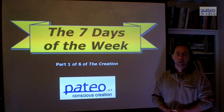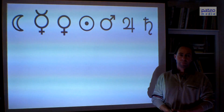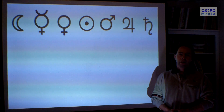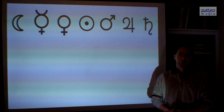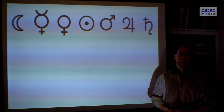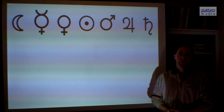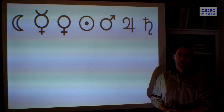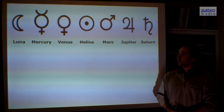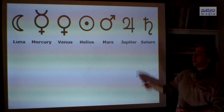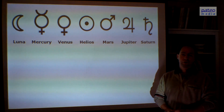This is the first lecture — it talks about the seven days of the week. The seven days of the week are related to planets, to lights we can see wandering in the sky. These are the astrological symbols for these lights. It starts with Luna, then Mercury, all the way up to Saturn. How are they related to the days of the week?